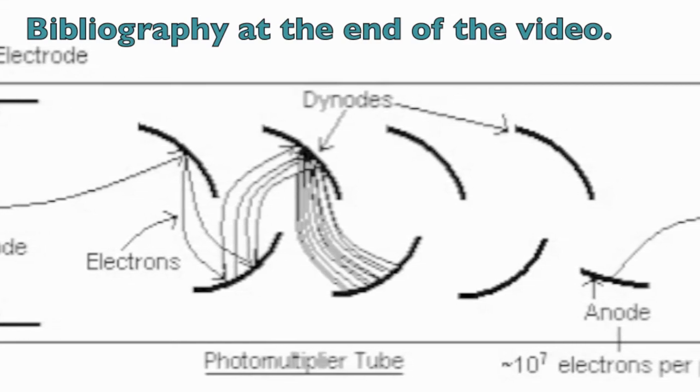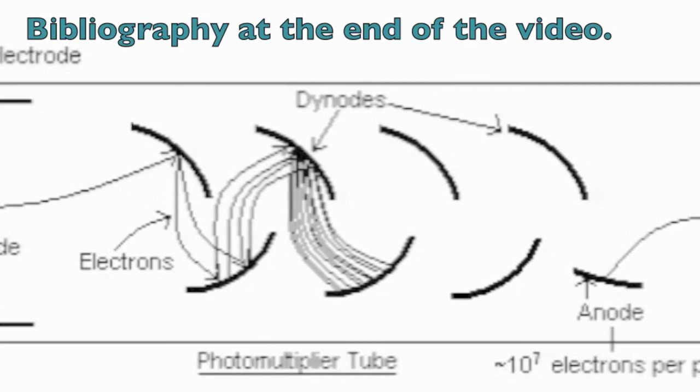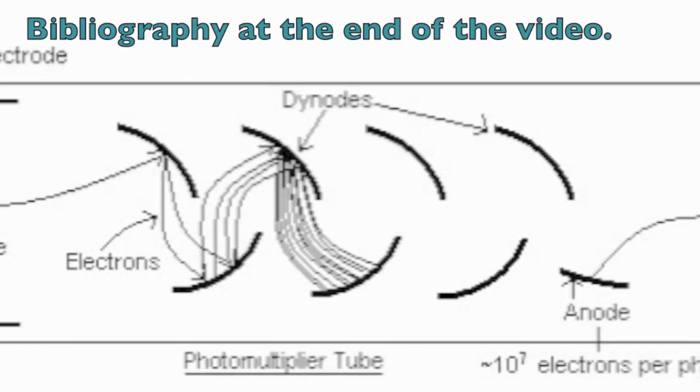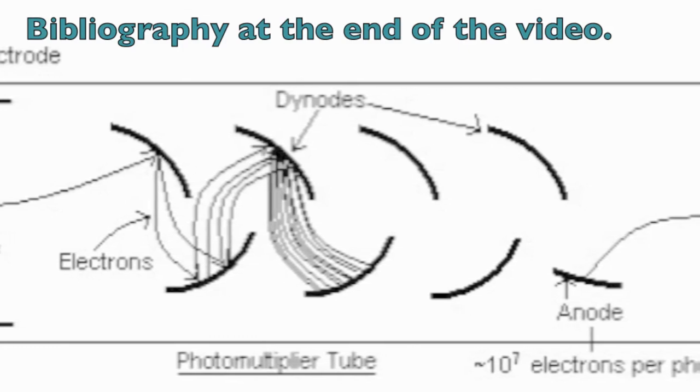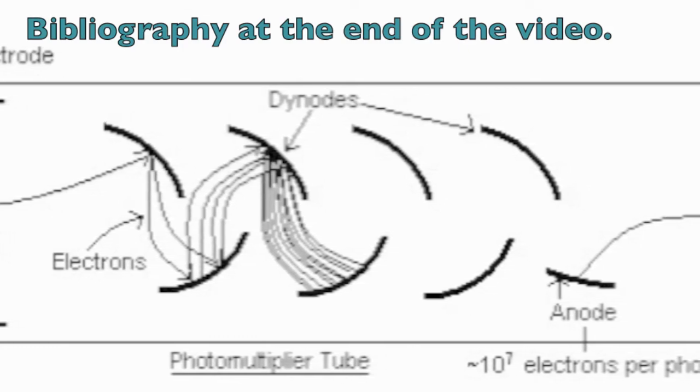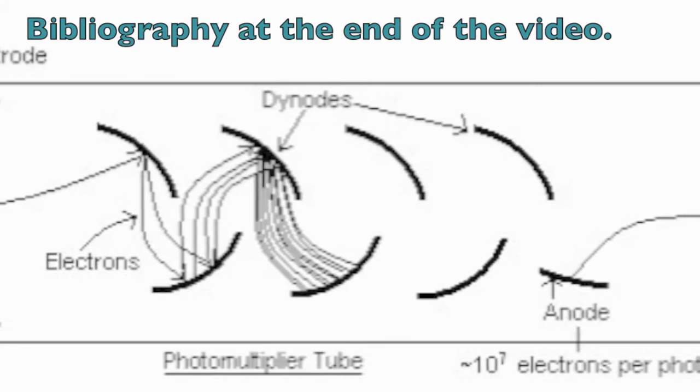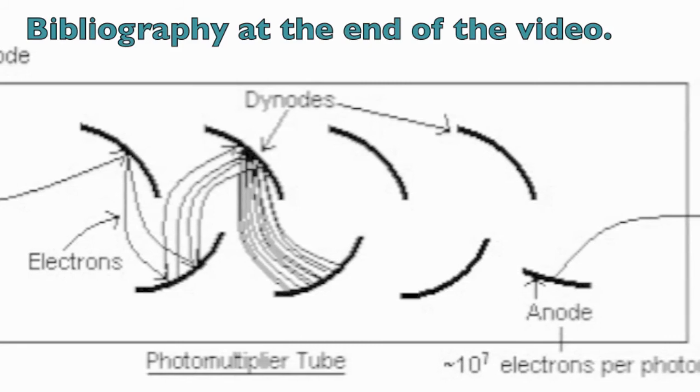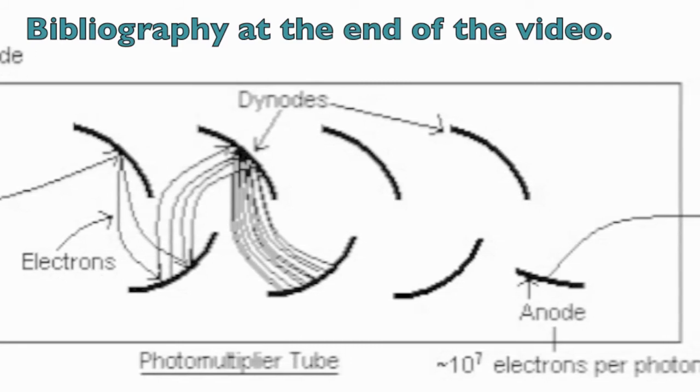Never actually bothered to count mine, but you can look in the picture. So at the end, this will actually result in a gain of upwards of a million, depending on your voltage. The higher the acceleration voltage, the higher the gain, because the more lower energy electrons you'll be able to produce, because the electrons will actually gain more energy as they're being accelerated.